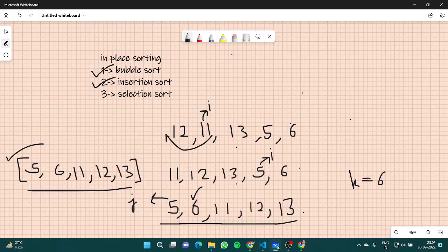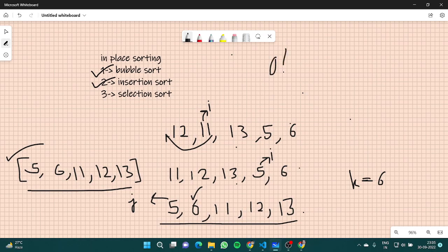So obviously the time complexity will be O(n²). I hope you understood what is insertion sort and what is bubble sort. I hope you understood the coding part as well and understood how the time complexity has been calculated.